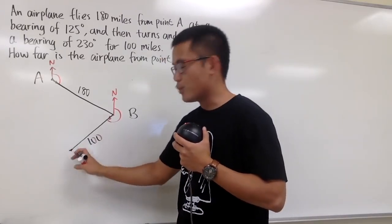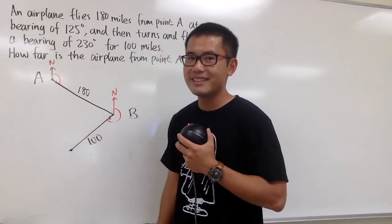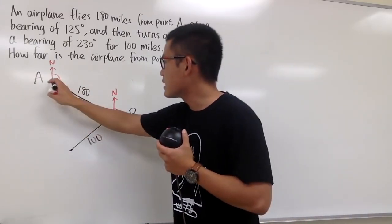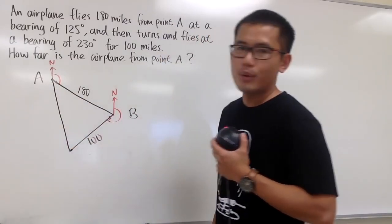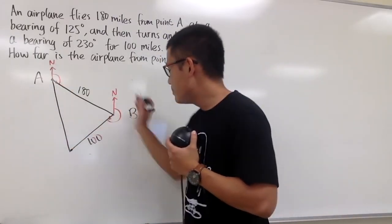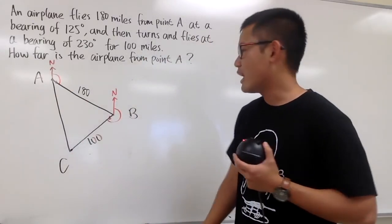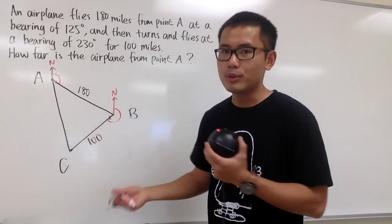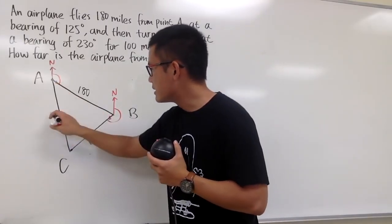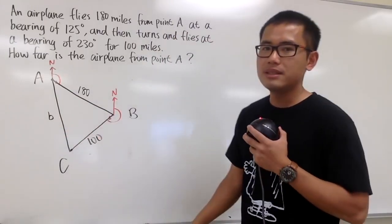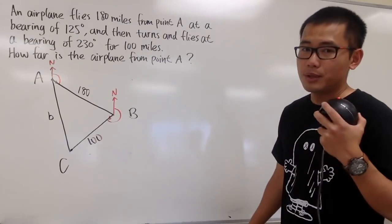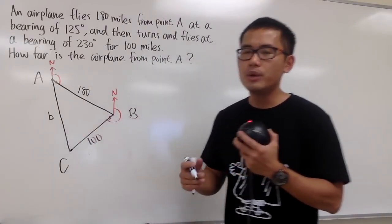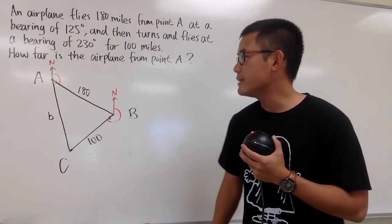Connecting the final position back to A completes the triangle with vertices A, B, and C. I'll label the final position C. The side I'm trying to find is little b — the distance from A to C. Since this doesn't appear to be a right triangle, I need to find the interior angles so I can use the Law of Sines or Law of Cosines.